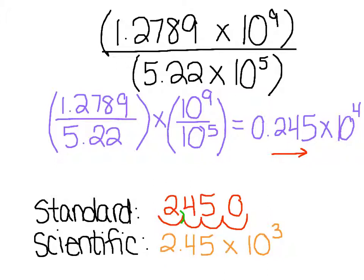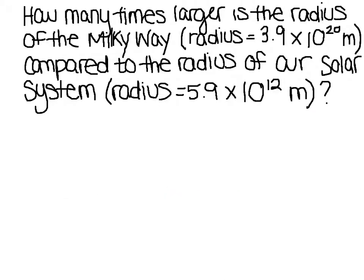If you got those two questions correct, I think you understand how to multiply and divide in scientific notation. Let's look at one more problem. Commonly, you're going to see scientific notation word problems — they love to pop up on BCRs and ECRs on tests, and it's a way to show how scientific notation is used in real life. The problem is: how many times larger is the radius of the Milky Way, which has a radius of 3.9 times 10 to the 20th meters, compared to the radius of our solar system, which has a radius of 5.9 times 10 to the 12th meters?